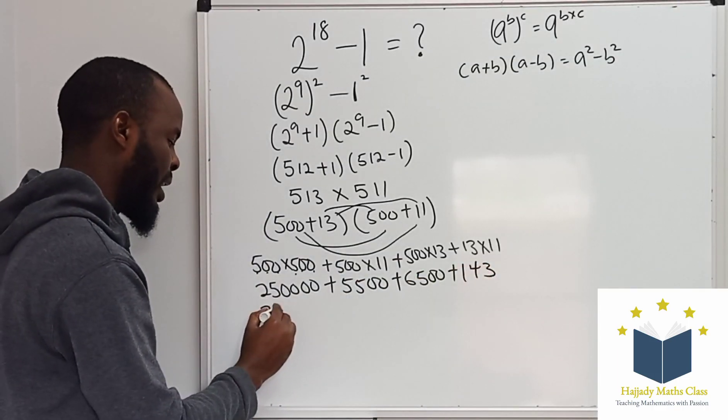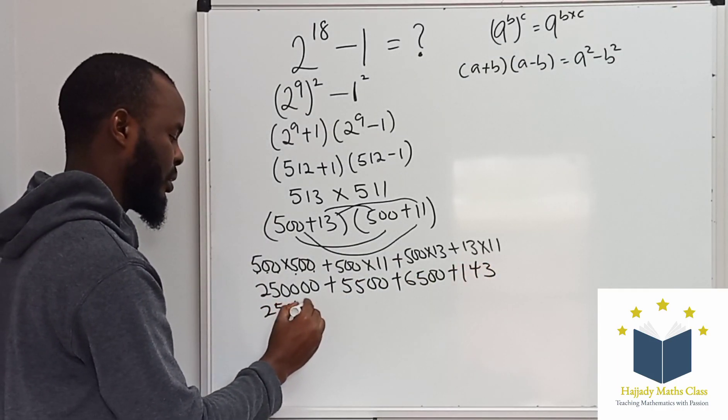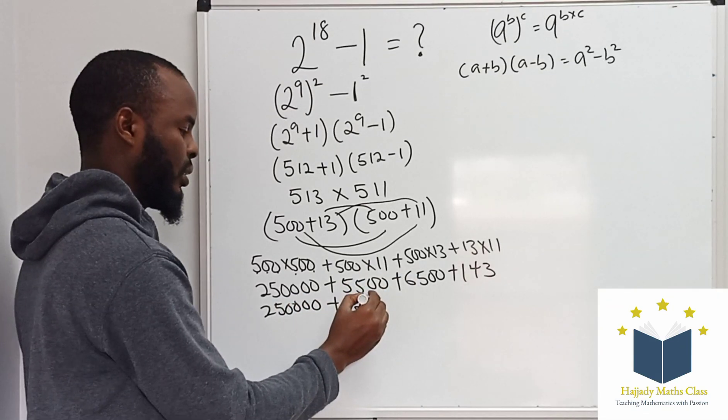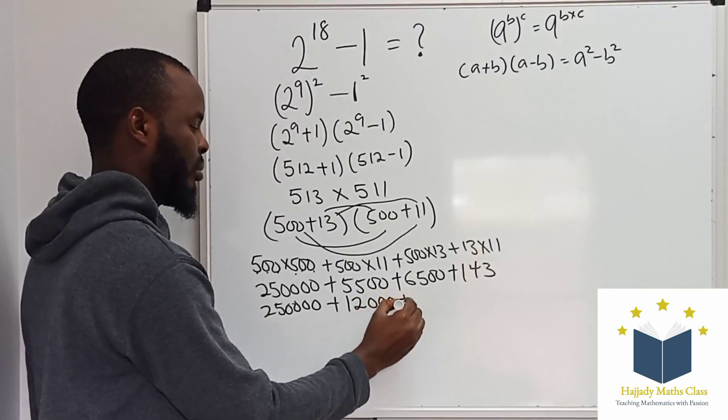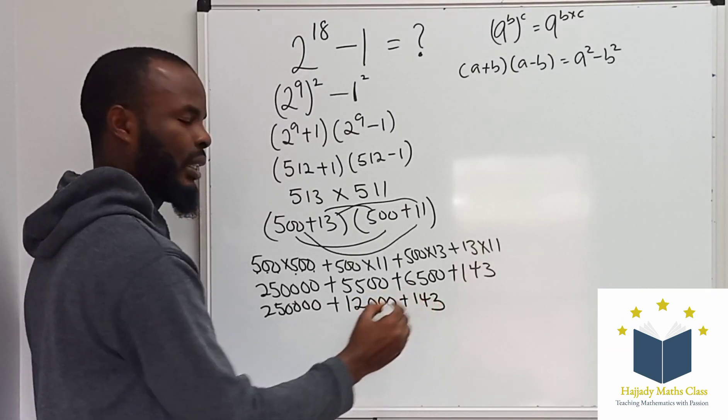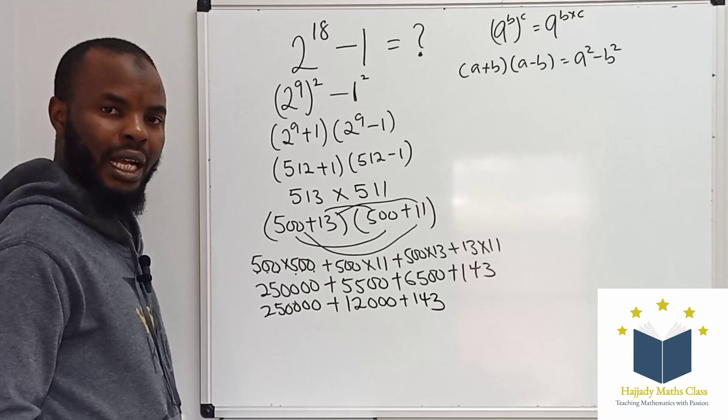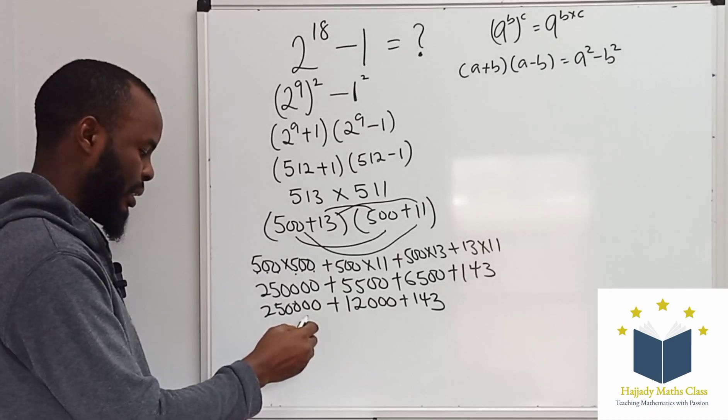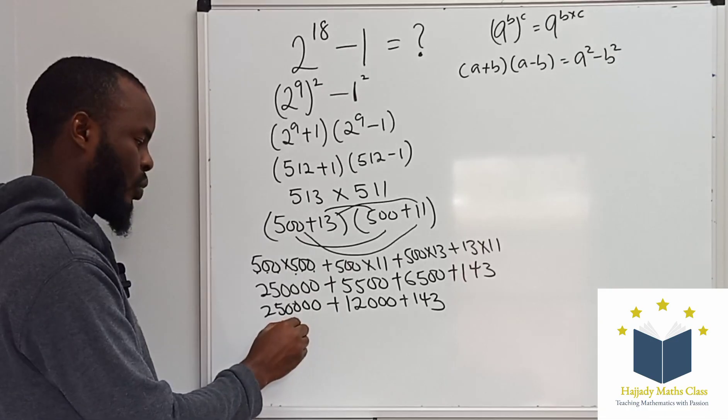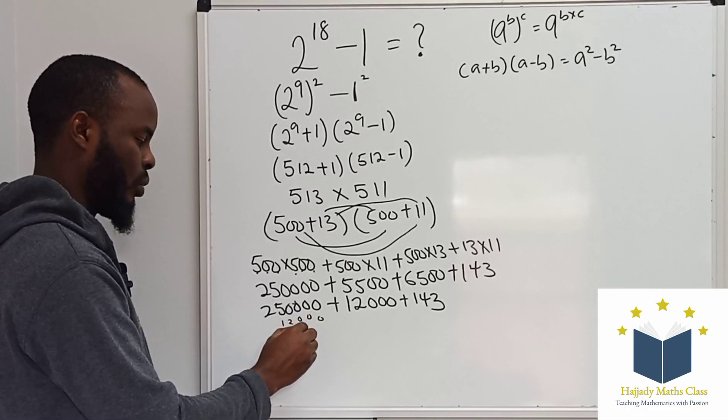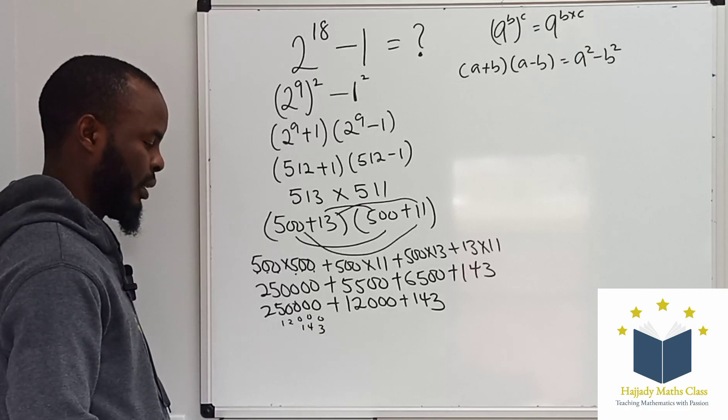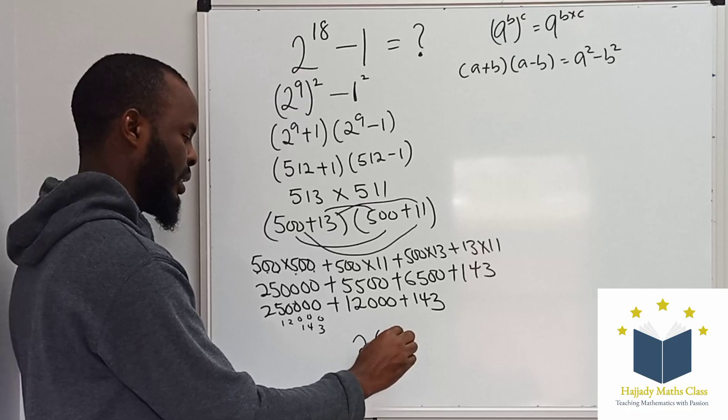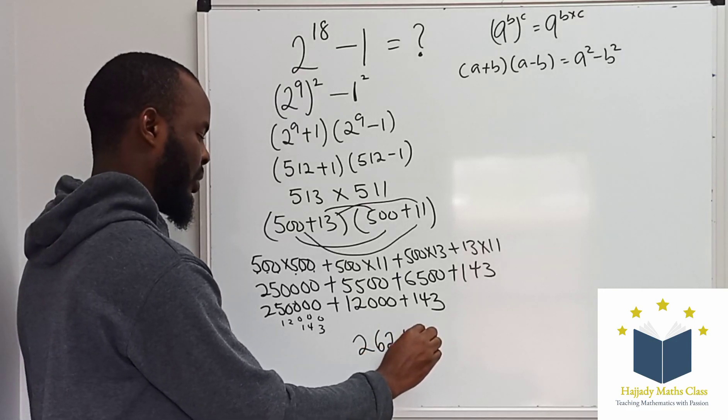So 250,000 plus 5,500 plus 6,500 plus 143. To add this together, you can do a little arithmetic: 250,000 plus 12,000 plus 143. So finally, we get 262,143.